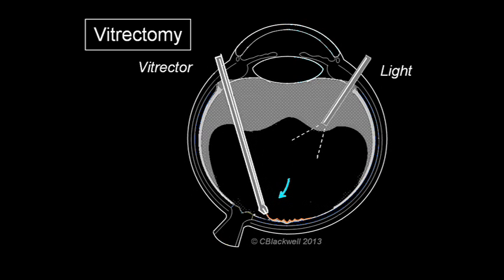With special, very fine forceps, one can delicately grab the edge of the membrane, peel it off the retina, and remove it from the eye.